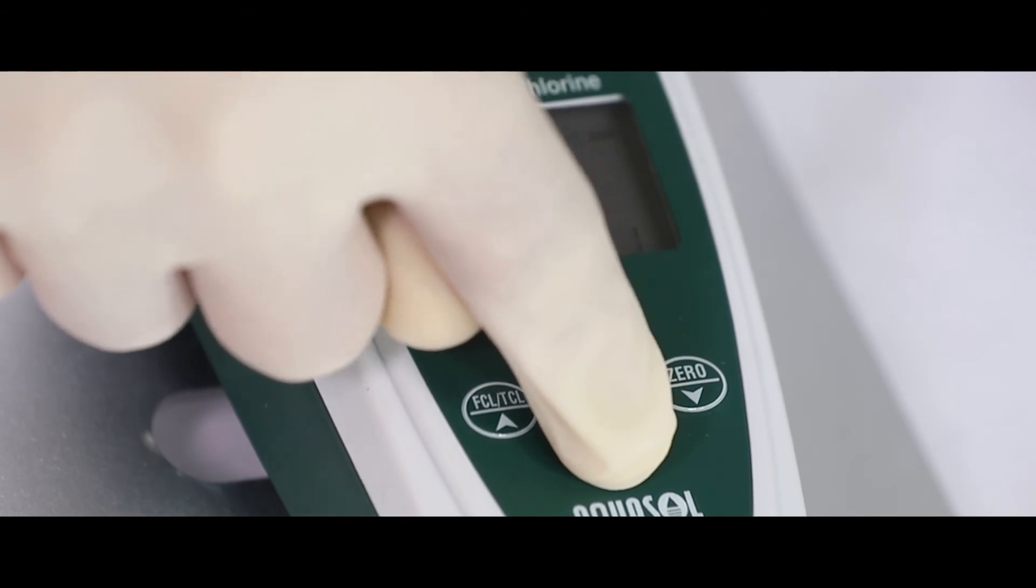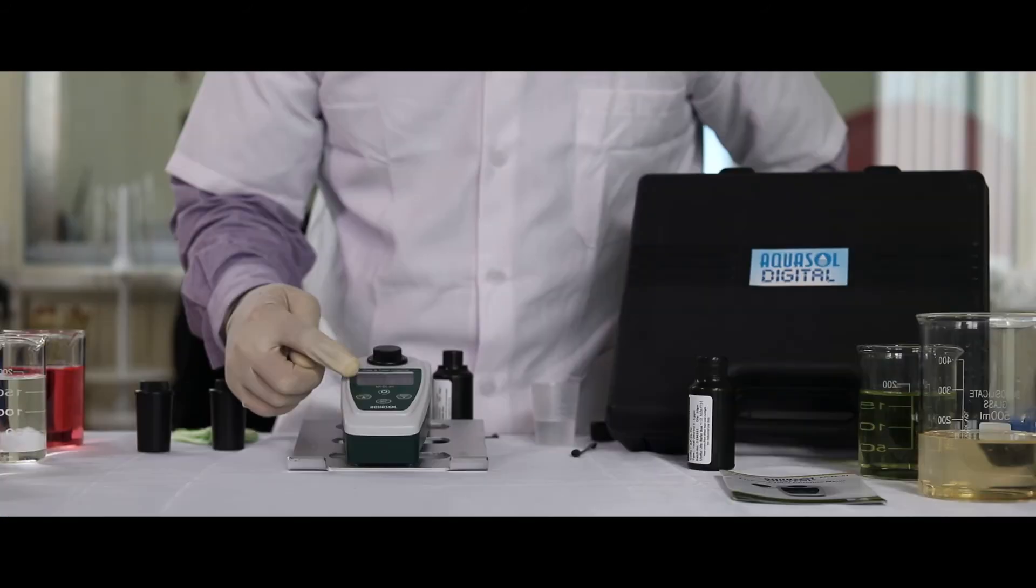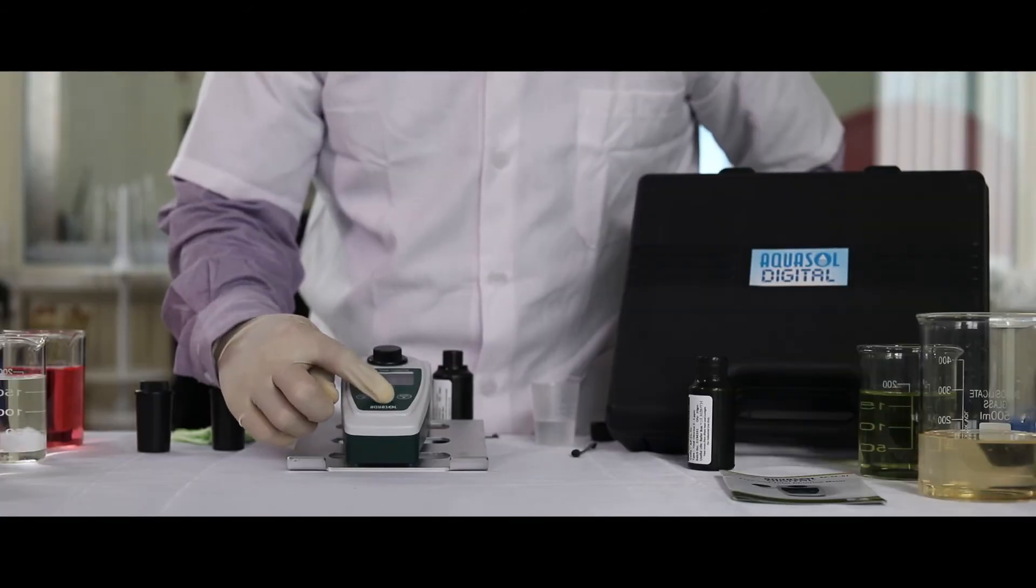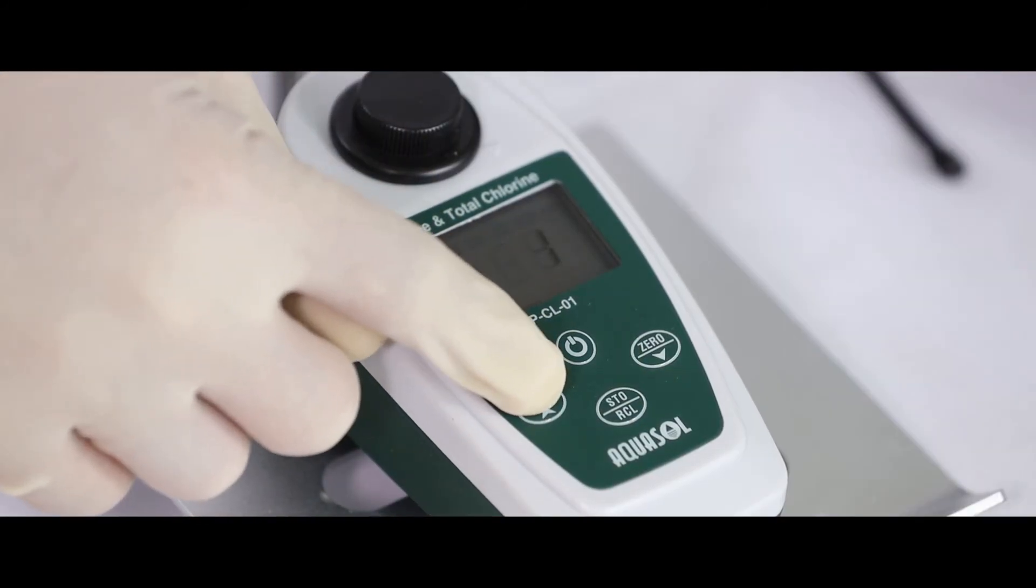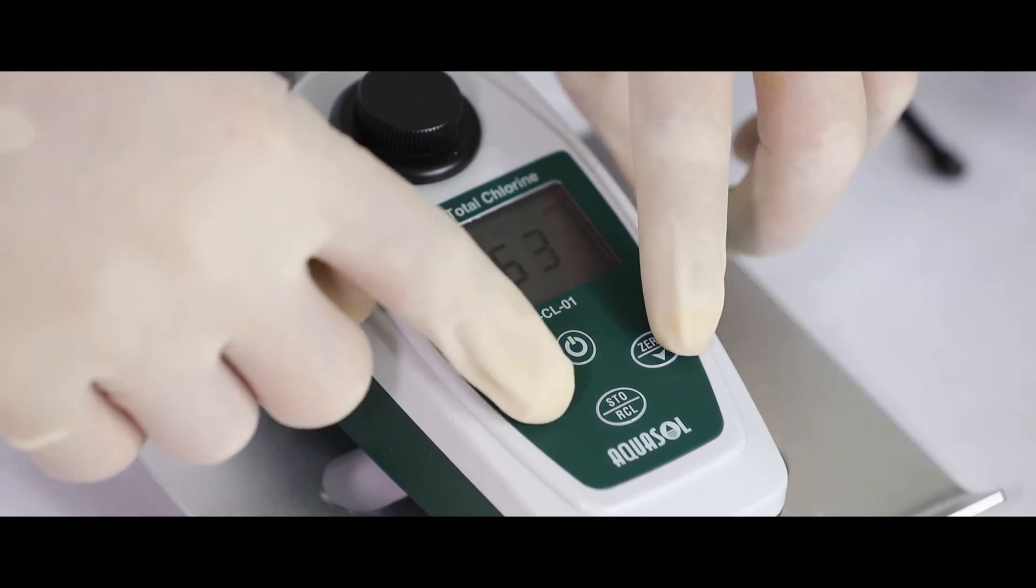Press STO slash RCL key to store the readings. To recall the readings, press and hold the same key. Use arrow keys to browse the stored data.